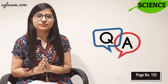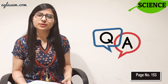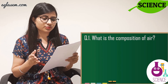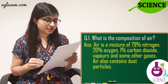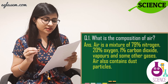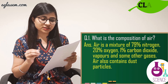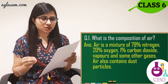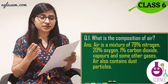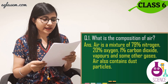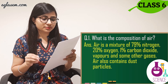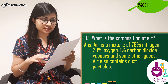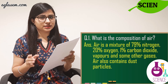Turn to page number 153, Question number 1: What is the composition of air? The answer is: air is a mixture of 79% nitrogen, 20% oxygen, 1% carbon dioxide, water vapors, and some other gases. Air also contains dust particles.